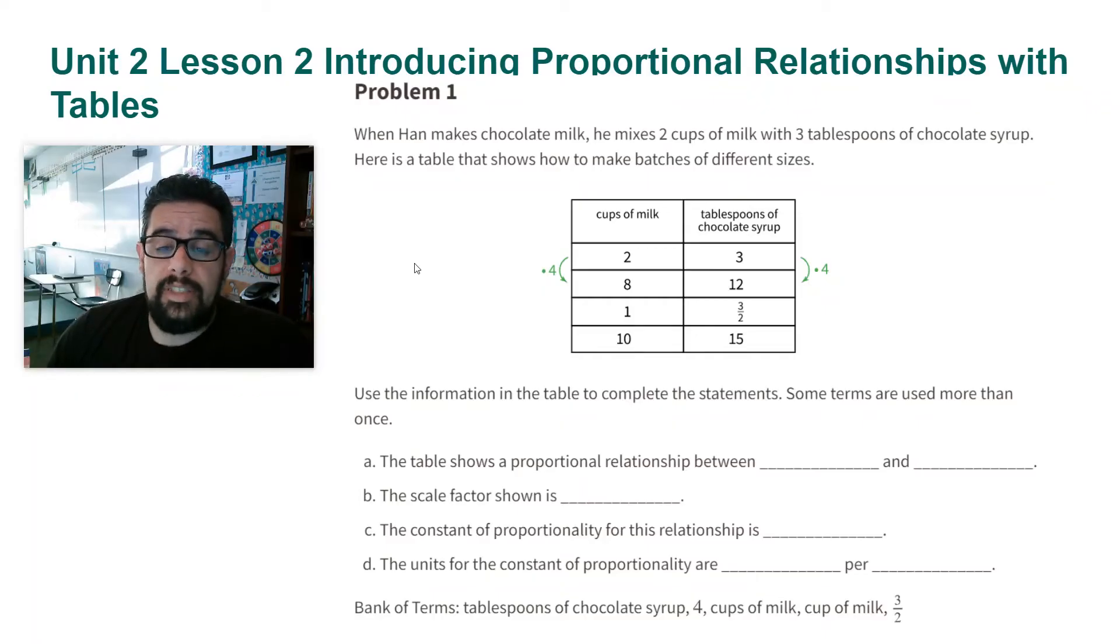When Han makes chocolate milk, he mixes two cups of milk with three tablespoons of chocolate syrup. Here is a table that shows how to make different batches of different sizes. And here we have the table. And then here we have use the information in the table to complete the statements.